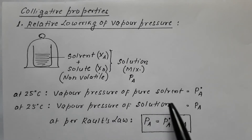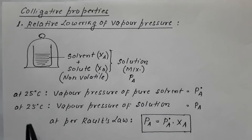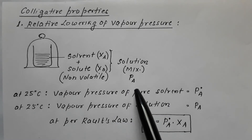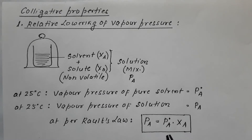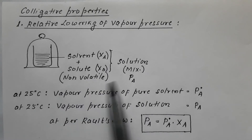When it was pure solvent the vapor pressure was P0A, and now after adding solute, at 25 degrees centigrade the vapor pressure of the solution is PA. Raoult's law says that the vapor pressure of the solution PA is equal to the vapor pressure of the pure solvent P0A multiplied by its mole fraction XA. Here PA is vapor pressure of solution, P0A is vapor pressure of pure solvent, and XA is mole fraction of solvent in the solution.